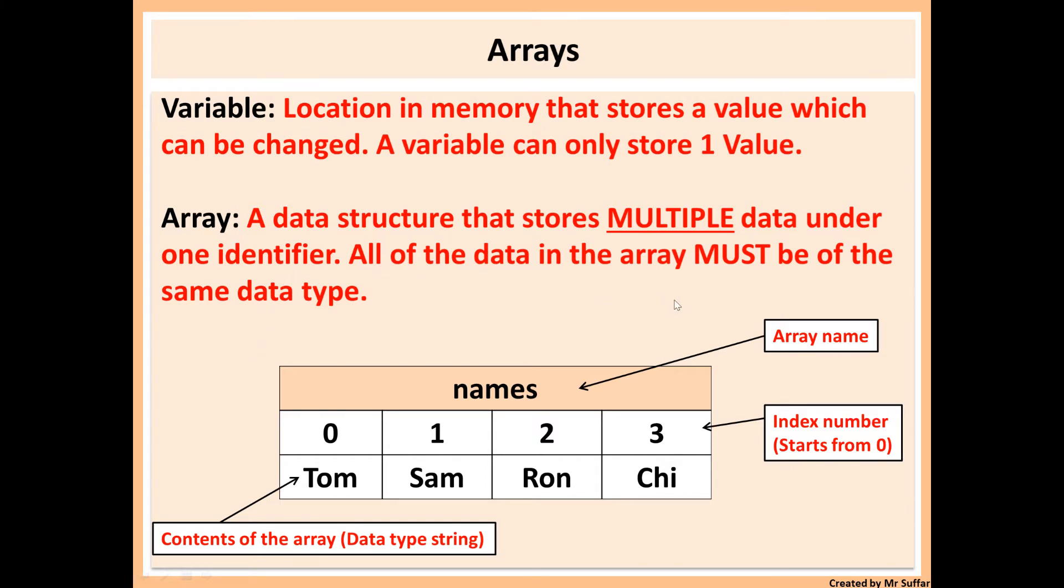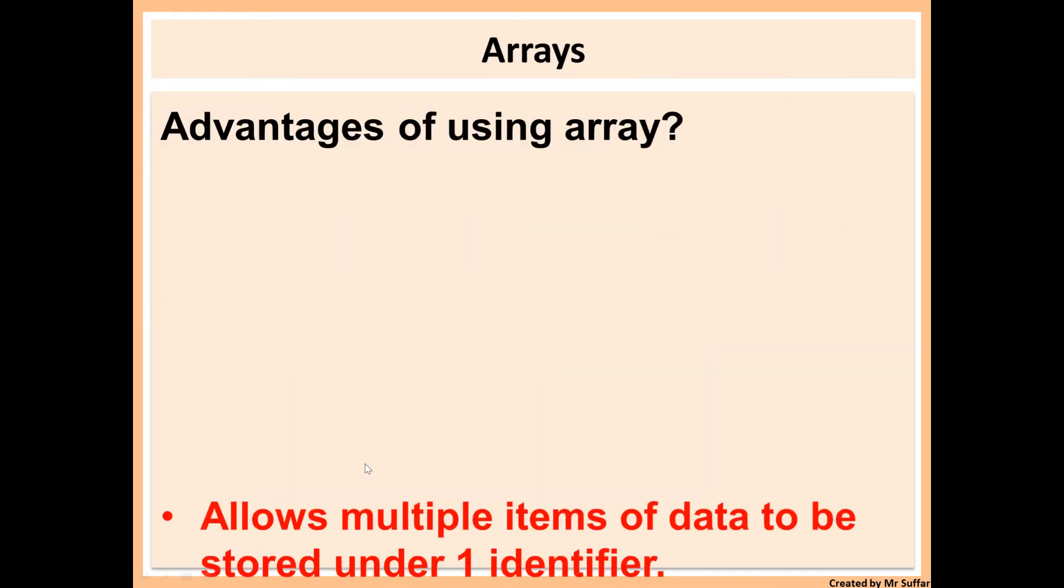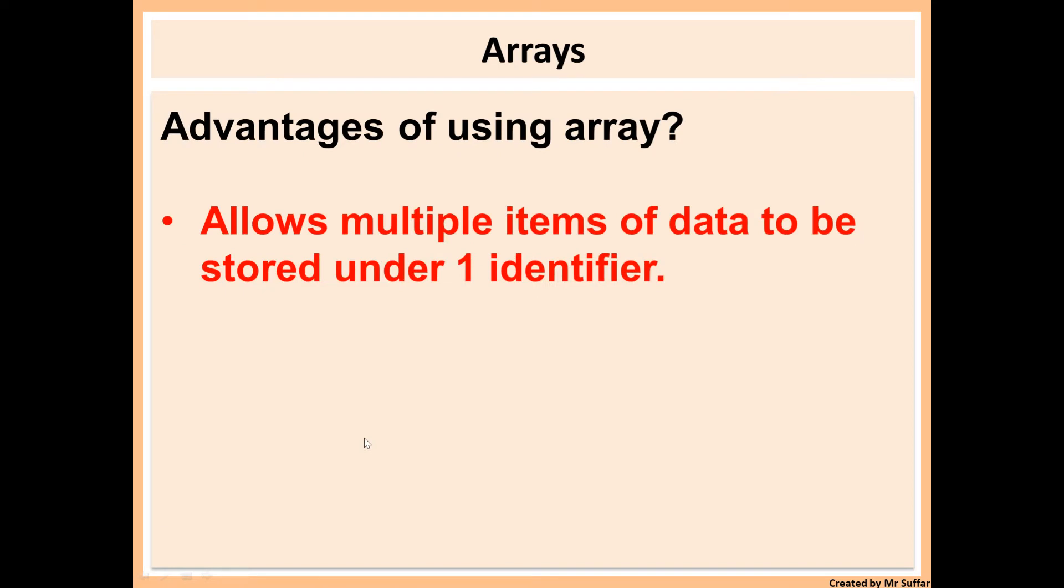All of the data in the array must be of the same data type. They must all either be string, integer, and so on. They have to be of the same data type. They cannot be an integer and a string in one array, that's not possible. An advantage of an array is that it can store multiple data over a variable and also it reduces the need for multiple variables.